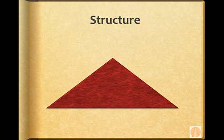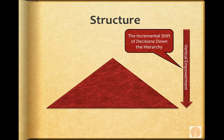That flattening of the organization, we would call vertical empowerment, and it's really concerned with the incremental shift of decisions down the hierarchy. So at every level of the hierarchy, each boss is incrementally giving decisions that he's currently taking to a subordinate. And he's giving the subordinate the means and the ability and the accountability to make those decisions.